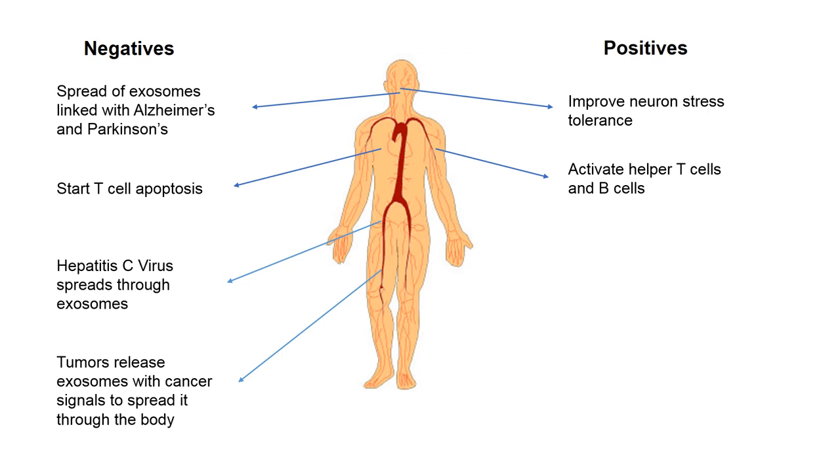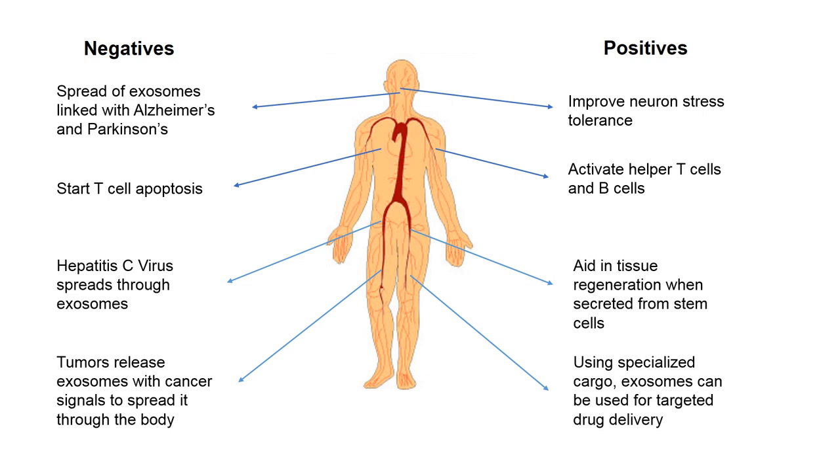They can also be sent to activate the immune system to produce T-cells and B-cells. When a stem cell is implanted in the human body, exosomes can help incorporate the foreign cells. Lastly, research into putting specific cargo into exosomes can help with drug delivery as exosomes can be put anywhere in the body.